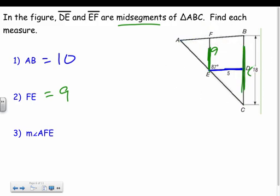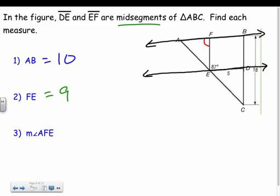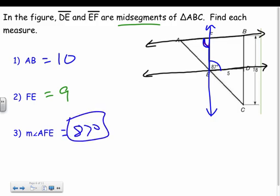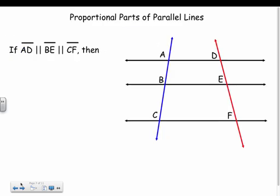For angle AFE: the mid-segment and the opposite side are parallel to each other, so extending them gives two parallel lines cut by a transversal. Since the given angle is 87 degrees, angle AFE equals 87 degrees as well — they are alternate interior angles. Parallel lines always give us alternate interior, alternate exterior, corresponding, and consecutive interior angle relationships.